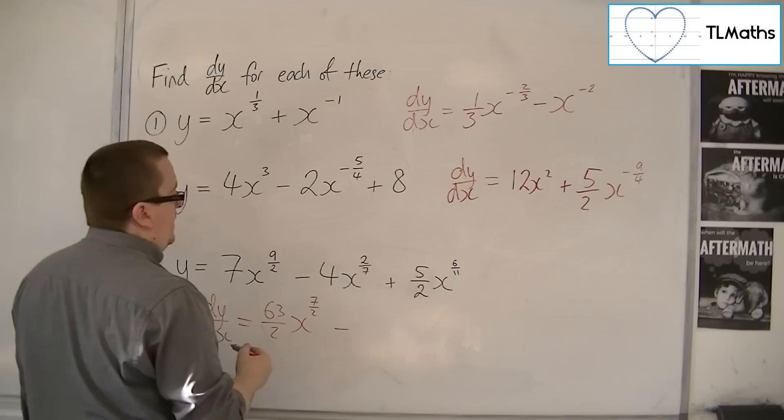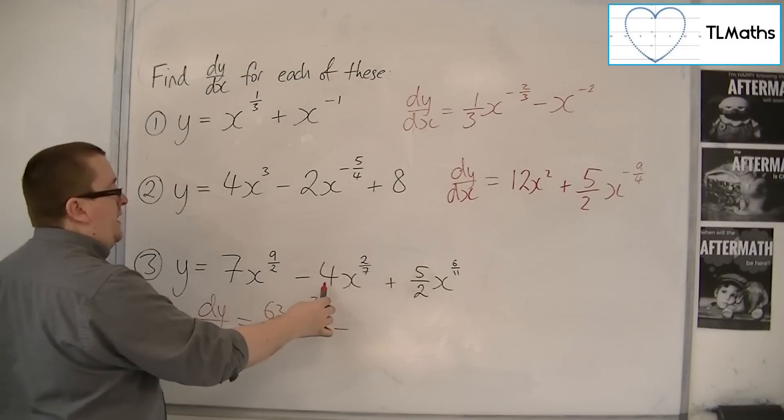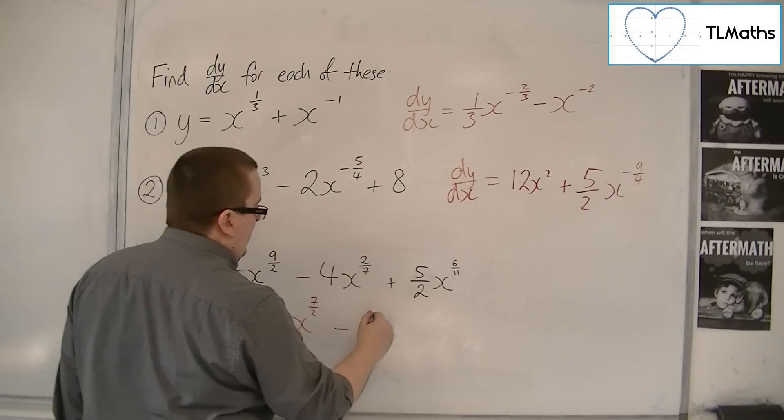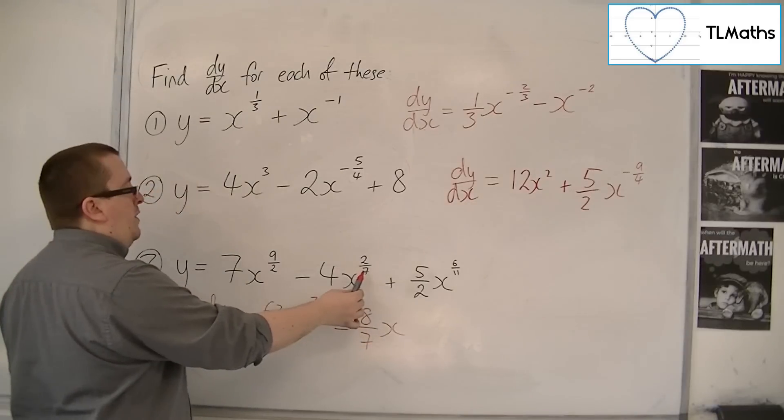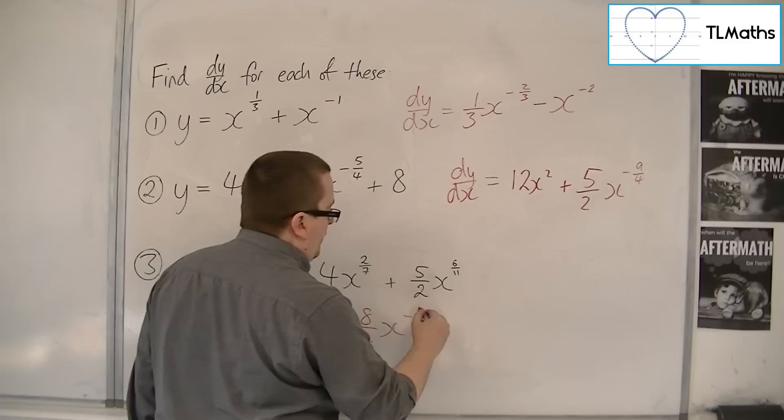Then we've got take away. The two-sevenths comes down to the front, multiplies with the four to make eight-sevenths x. Then you want to take one off the power. Two-sevenths take away one is minus five-sevenths.